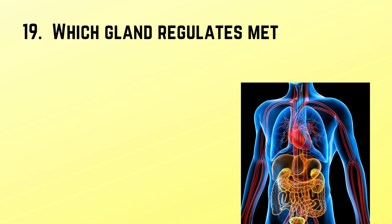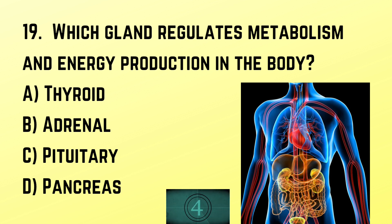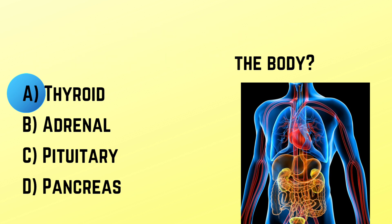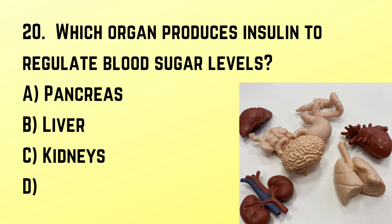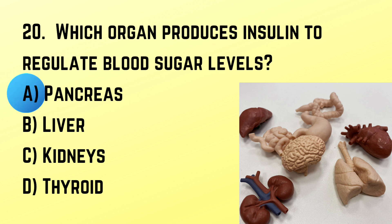Question number 19: Which gland regulates metabolism and energy production in the body? Correct answer: A. Thyroid. Question number 20: Which organ produces insulin to regulate blood sugar levels? Correct answer: A. Pancreas.